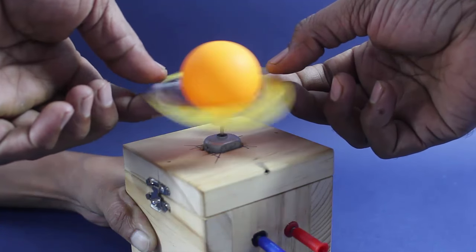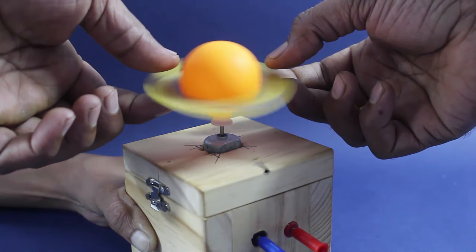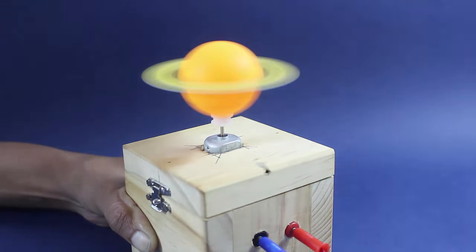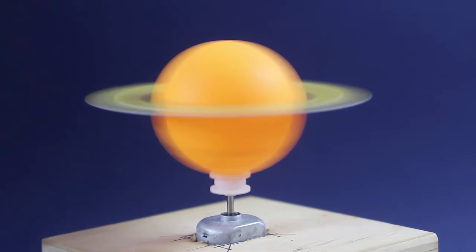Now gently place the card ring on the spinning ball. Hold the ring for a while and then let it go. The card ring will keep spinning and it will look just like Saturn's ring.